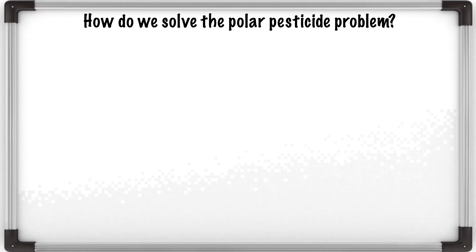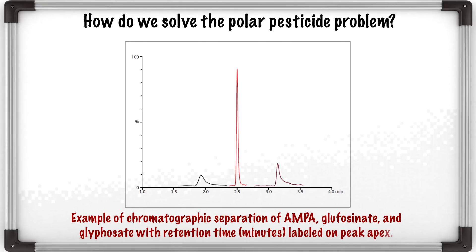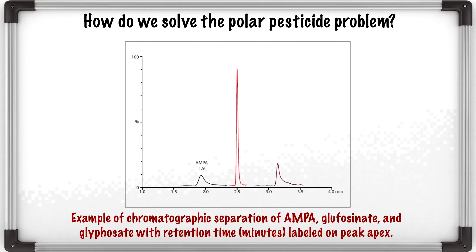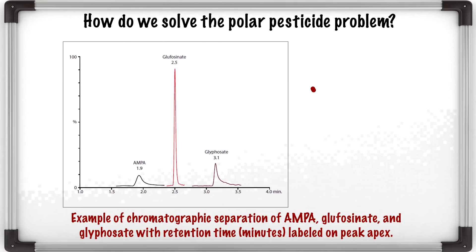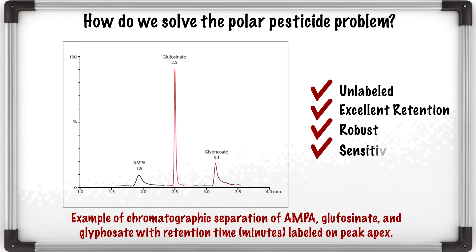Here we show typical chromatograms of glyphosate-related compounds: AMPA, glufosinate, and glyphosate. These are unlabeled analytes with excellent retention on the DEA column. By using the Xevo TQ-XS mass spectrometer, this analysis is very reliable and sensitive. Sounds like we found a good solution to a tough analytical problem.